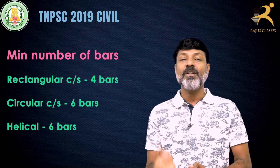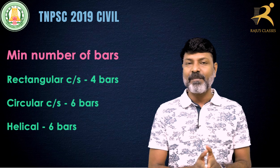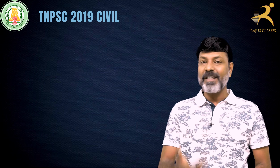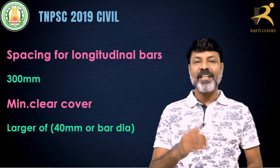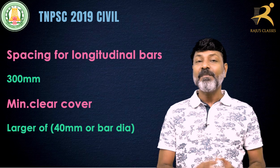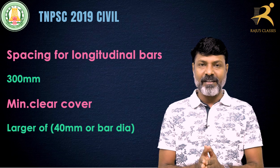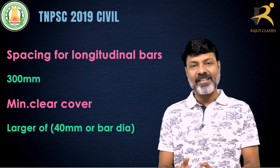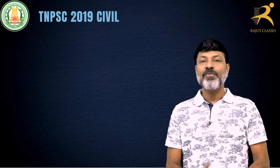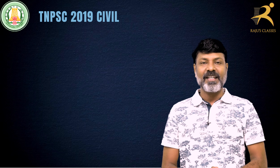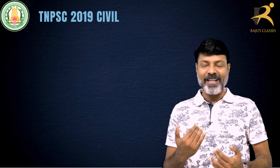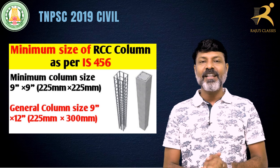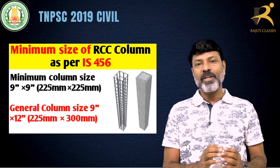The minimum spacing required is 300 mm as per IS standard. The minimum clear cover is 40 mm or the diameter of the bar, whichever is larger. As per IS 456-2000, the minimum size of an RCC column is 9 inches by 9 inches, that is 225 mm by 225 mm. In slenderness cases, you can use 225 mm by 300 mm.